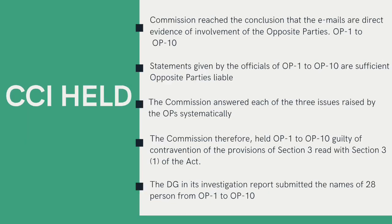While dealing with Issue 1, the Commission analysed the email communications, messages sent via WhatsApp, the explanations of employees of the OPs for those messages, evidences submitted by the DG, disclosures made by the parties during their submissions, and all other material on record. Based on this, the Commission reached the conclusion that such emails are direct evidence of the involvement of OP1 to OP10 and their respective individuals, as they had discussed every detail of the tenders and the process to rig the bid at every step. They had even discussed how they would be compensated if they did not win previous tenders. In the opinion of the Commission, such admissions are sufficient to hold the opposite parties liable for contravention of the provisions of the Act.